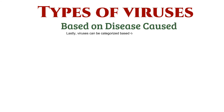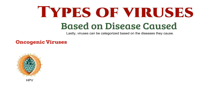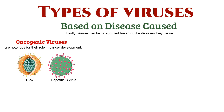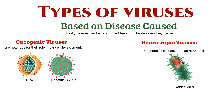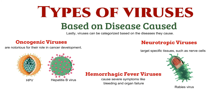Viruses can also be categorized based on the diseases they cause. Some viruses, like HPV and hepatitis B virus, are notorious for their role in cancer development. Others target specific tissues, such as nerve cells with viruses like rabies virus, or cause severe symptoms like bleeding and organ failure with viruses like Ebola virus and dengue virus.